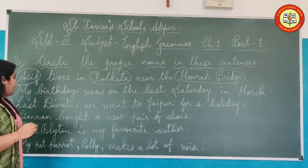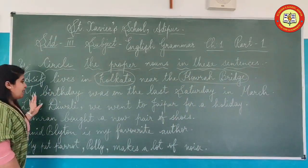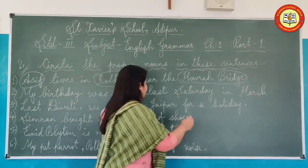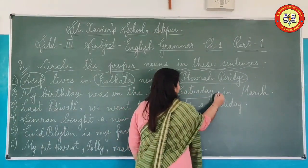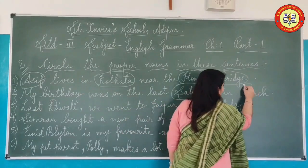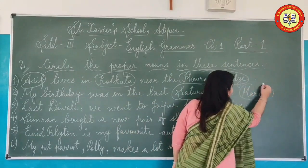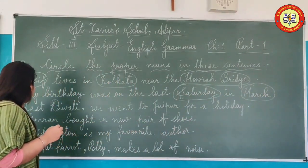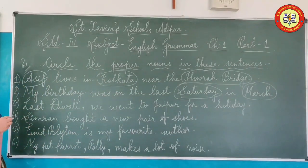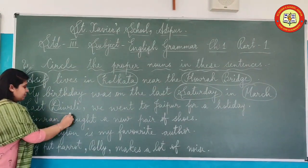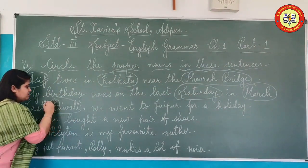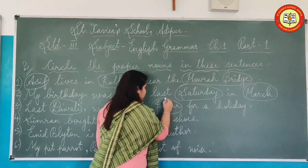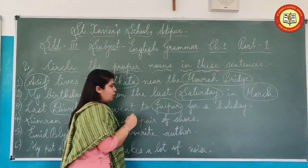Second sentence: 'My birthday was on the last Saturday in March.' Here, Saturday will be the name of the day and March the name of a month. Third sentence: 'We celebrated Diwali.' Diwali is the name of a festival. 'We went to Jaipur,' — that is the name of the city — 'for a holiday.'